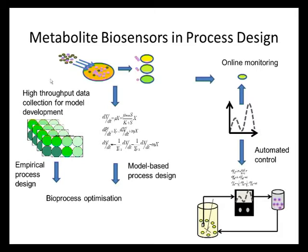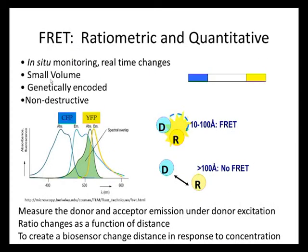The types of biosensors we need to use then need to be able to accurately quantify the metabolites. We don't just want something that goes on or off — we need to be able to understand what the concentrations are. For this reason, we use the principle of fluorescence resonance energy transfer, or FRET, which is both a ratiometric and a quantitative measure.